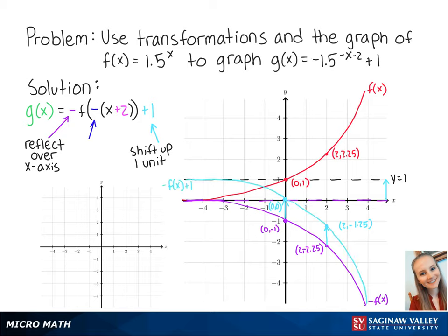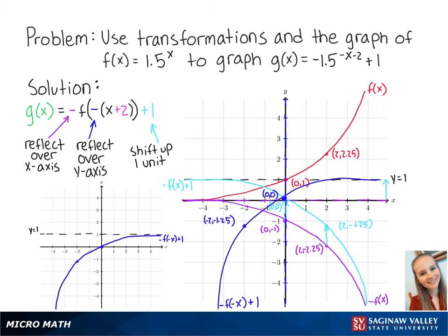The negative x means that we will reflect the graph over the y-axis. So our new points are at (-2, -1.25) and (0, 0) remains the same. Connecting these points, we get the graph of negative f of negative x plus 1.